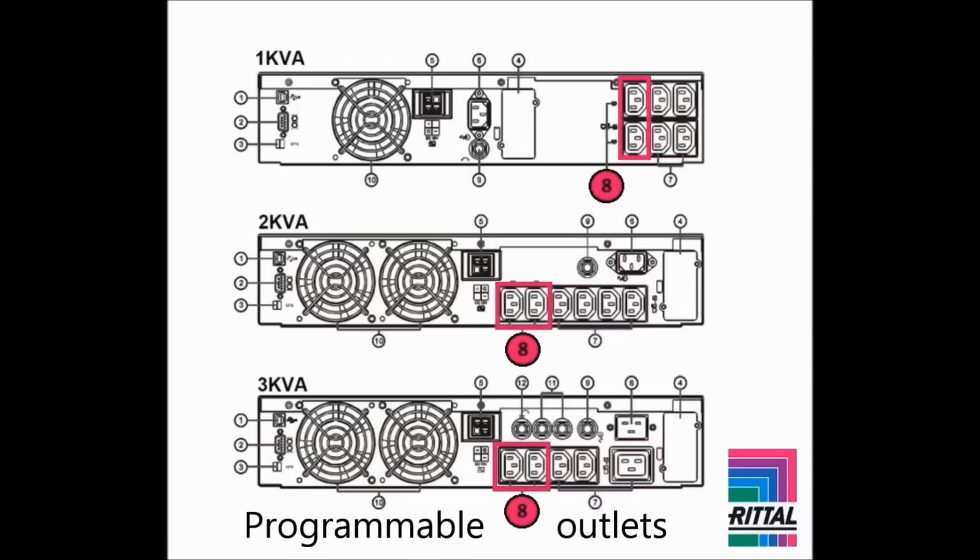The programmable outlets can be configured using the free software. The programmable outlets can be used for connection of uncritical loads. These outlets can be configured to automatically switch off when certain conditions have been met. This could prolong the autonomy time for critical loads during a mains power failure.